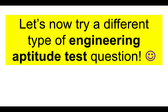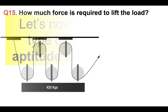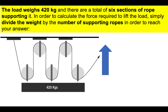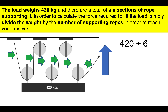Let's now try a different type of engineering aptitude test question. Question 15: how much force is required to lift the load? The load weighs 420 kilograms and there are a total of six sections of rope supporting it — 1, 2, 3, 4, 5, and 6. To calculate the force required, simply divide the weight by the number of supporting ropes: 420 divided by 6 equals 70 kilograms.